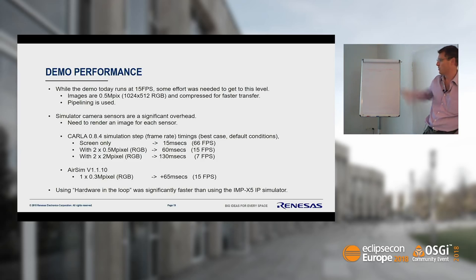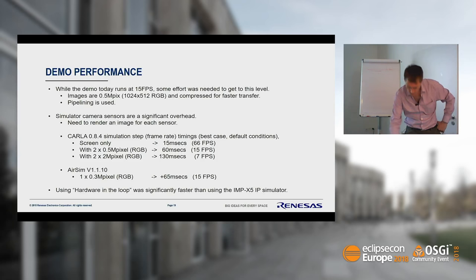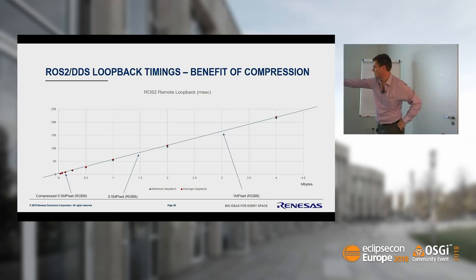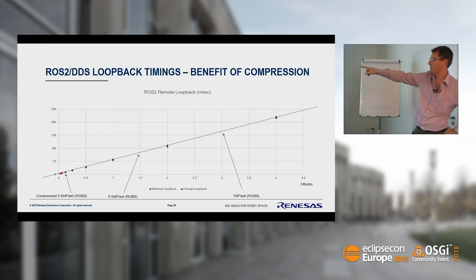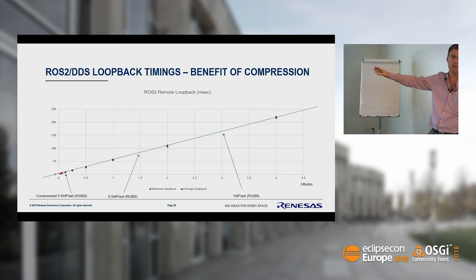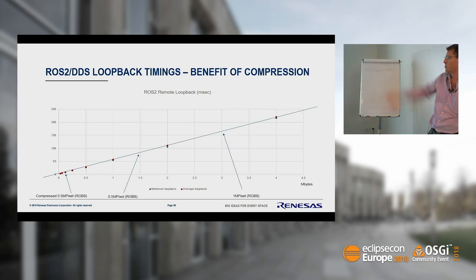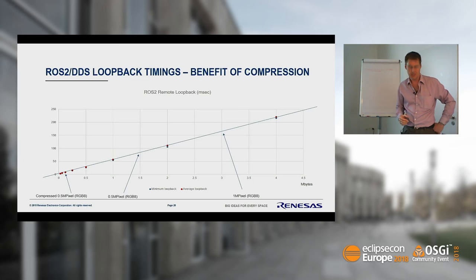On latency: half a megapixel is 1.5 MB of data. Raw loopback is 80 milliseconds — so about 40 ms to send across DDS — which is roughly 300-400 Mbps, a lot of data. With compression, loopback drops to about 10 ms, or 4-5 ms one-way. At one megapixel, raw data is about 3 MB with 70-80 ms loopback — very bad latency. Compression was very beneficial for getting images across the DDS link, even on gigabit Ethernet, which struggles with raw camera images.